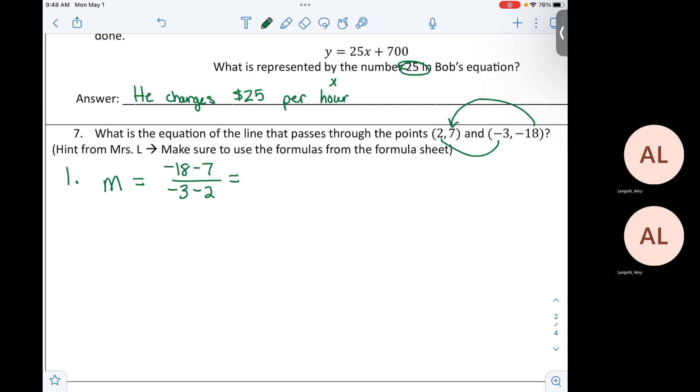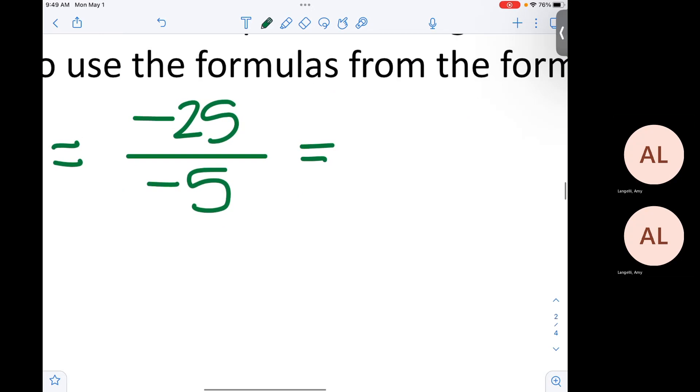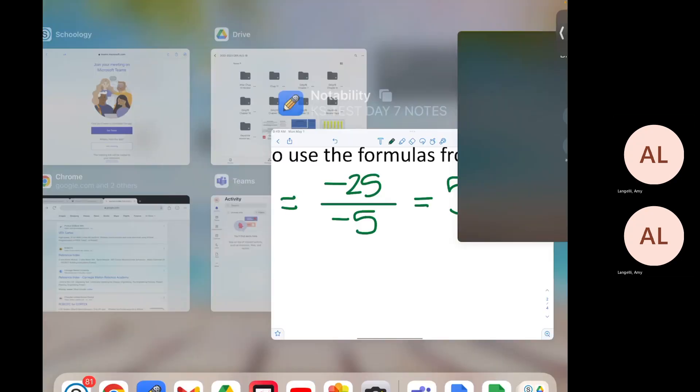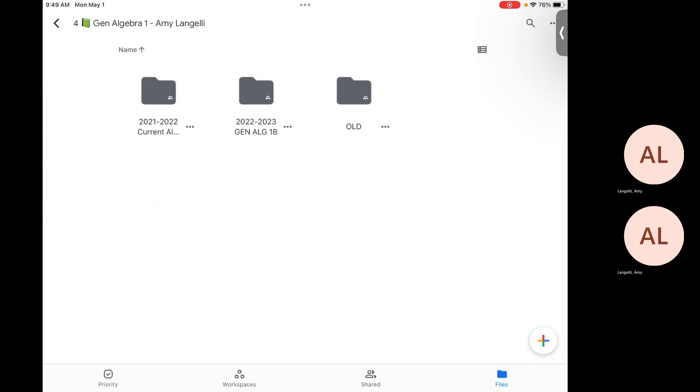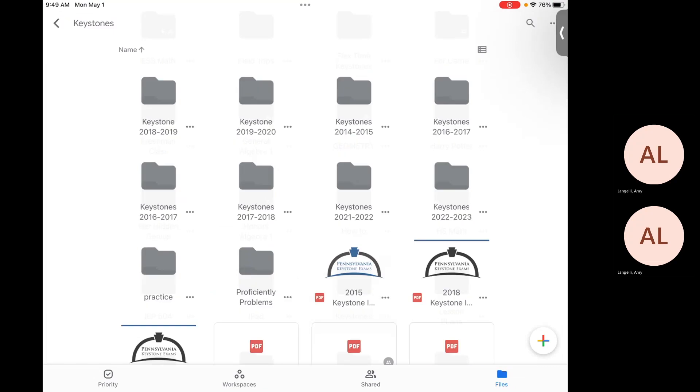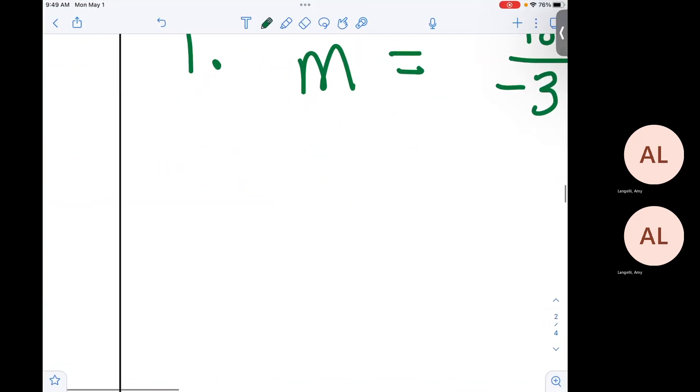Simplify the numerator. What does that give you? Use your calculator. Please use it now so you're more familiar with it come keystone time. Negative 25 is correct. What is the denominator? Negative 5. And what buttons help us to reduce this if we're unclear? What would your calculator give you on that? 5. Step two.